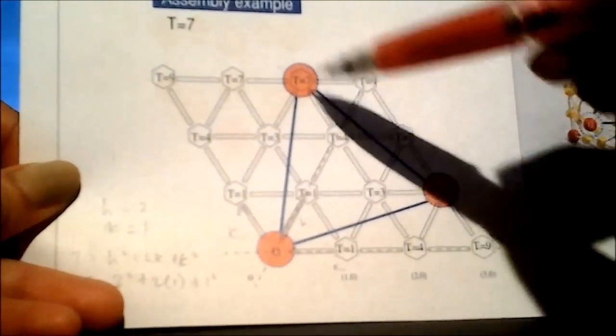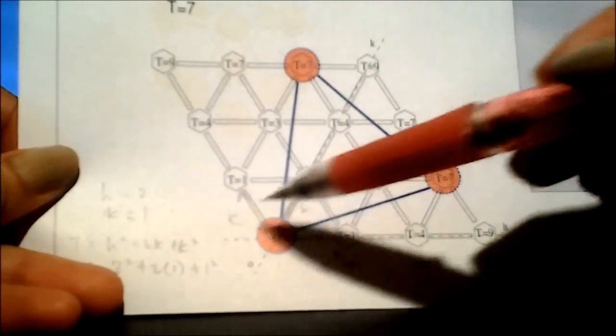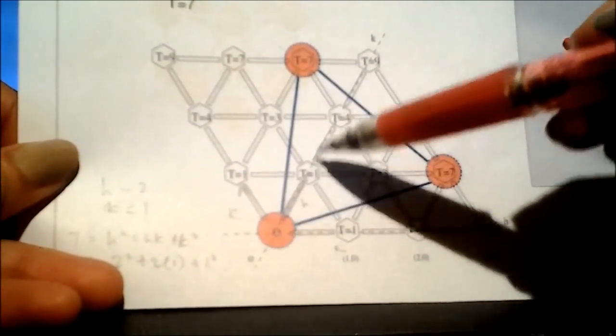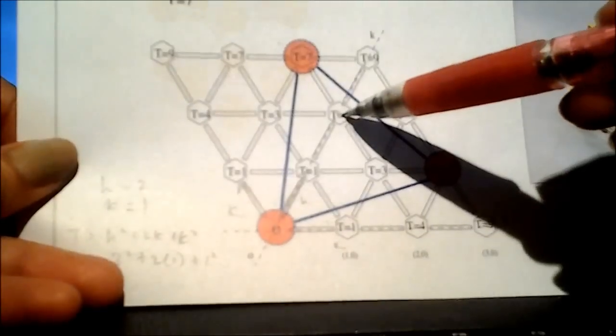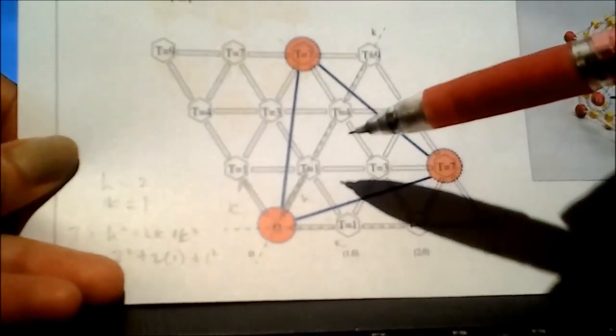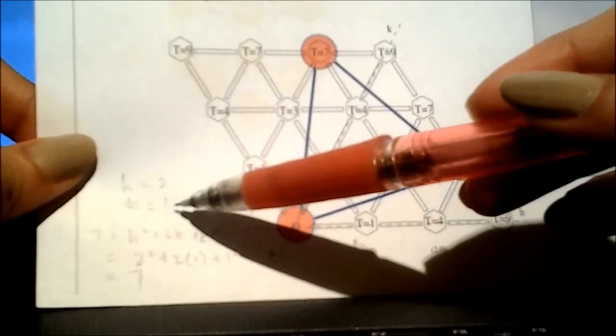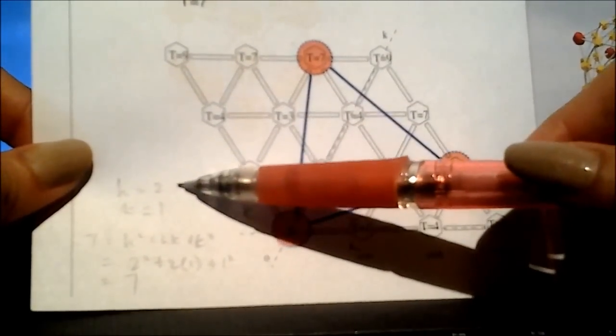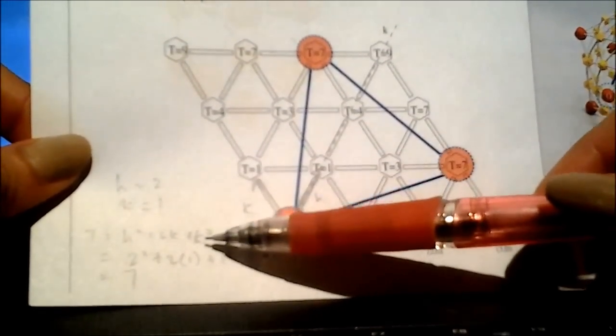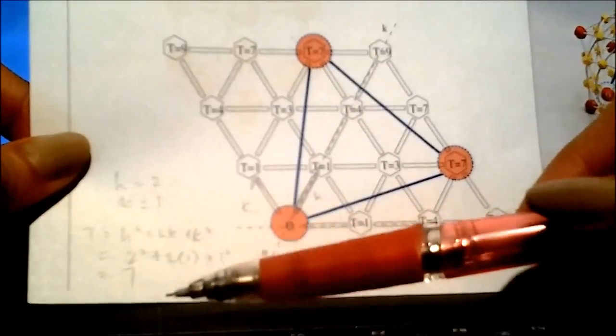It's one, two—so that's two for the h direction and one for the k direction. Therefore, h would equal two and k would equal one. When you substitute that into the equation, you get T=7. That's pretty much it, and I'm so excited that I understand this now.